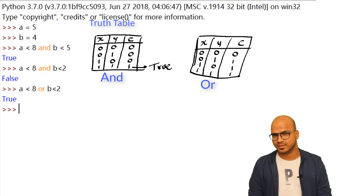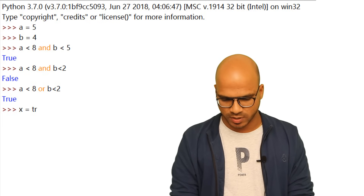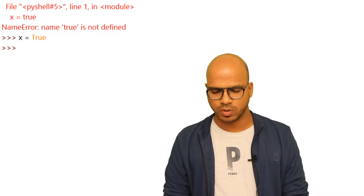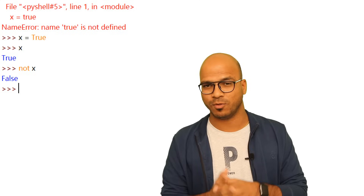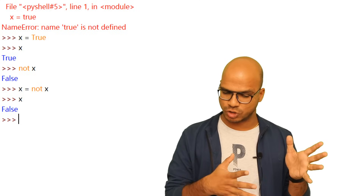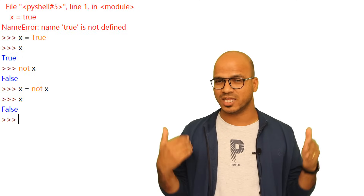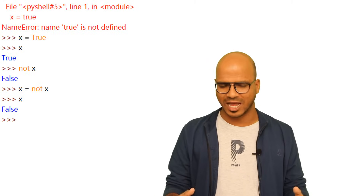The 'not' operator reverses your output. If x is equal to True and you say not x, you get False. You can also assign it back: x equal to not x. So if x was True, it becomes False. This is how 'not' works as a logical operator — it reverses the boolean value.